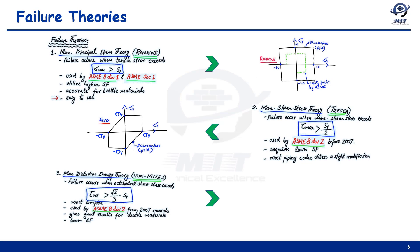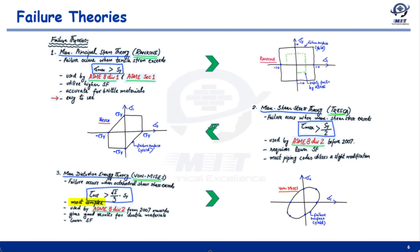Finally, maximum distortion energy theory, commonly known as Von Mises theory. The condition for failure is when octahedral shear stress exceeds √(2/3) times yield strength. It is the most complex of the three theories. It is used by Division 2 since 2007, gives very good results for ductile material, and needs a lower safety factor, but the complexity of the equation requires computer analysis such as FEA software. The failure surface is an ellipse circumscribing the hexagon of Tresca theory.